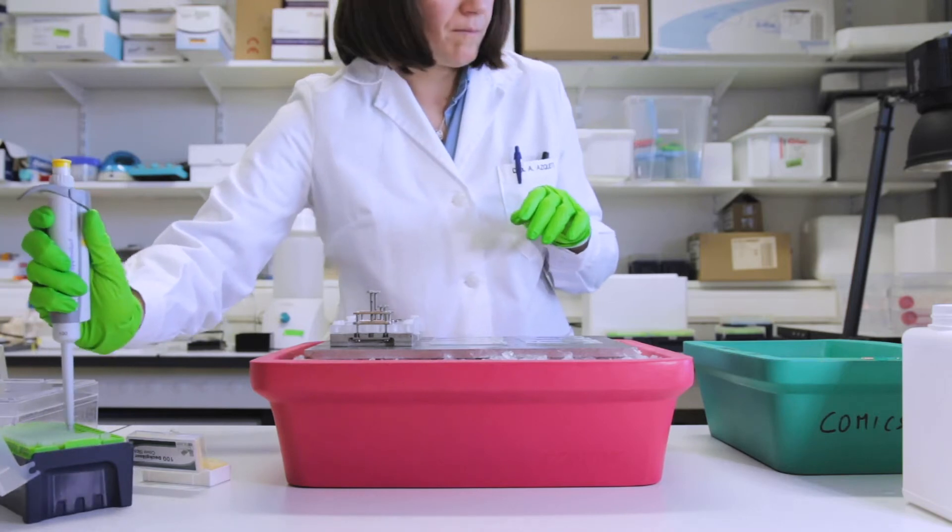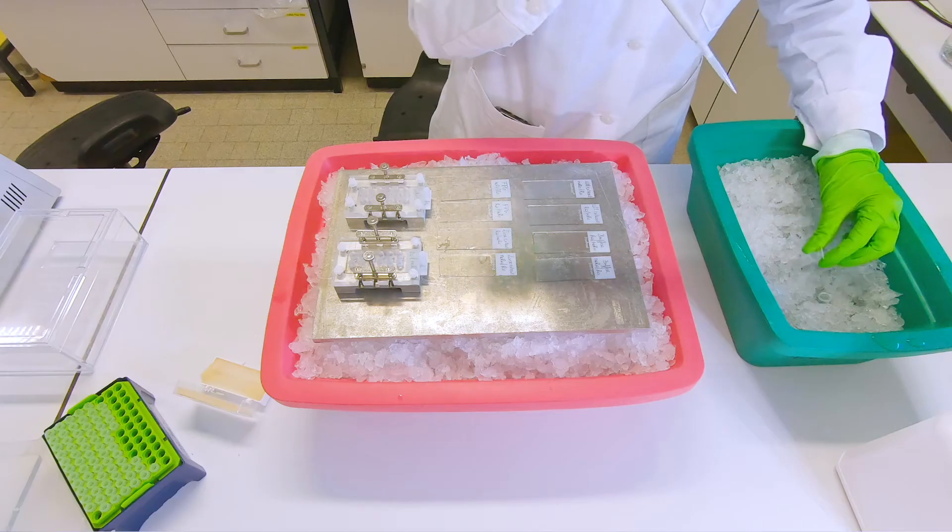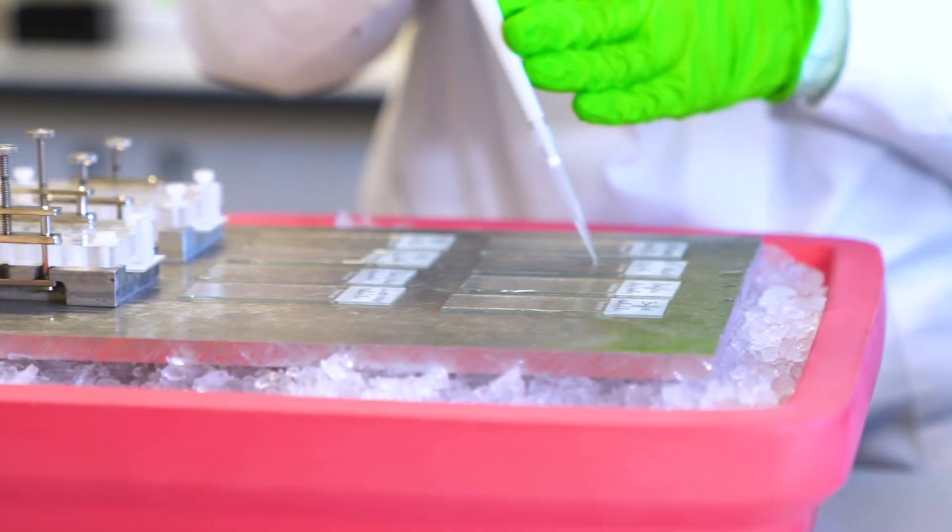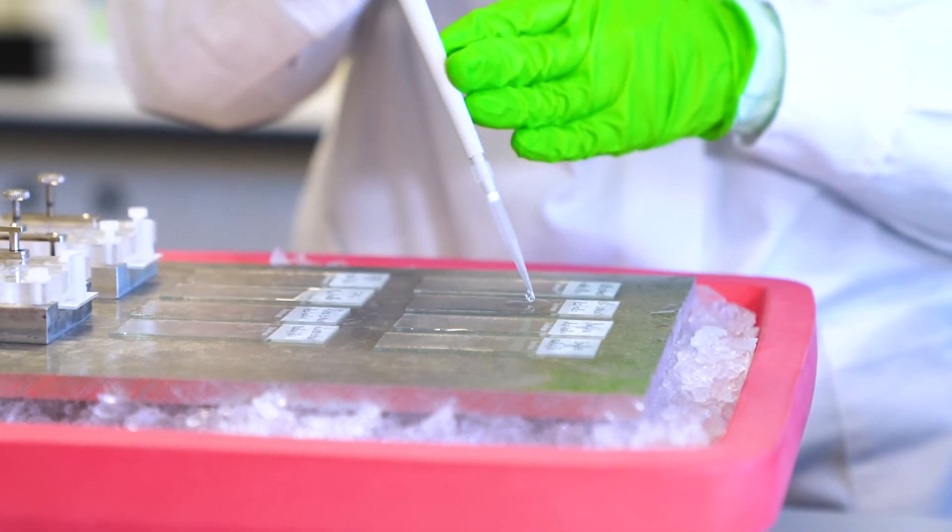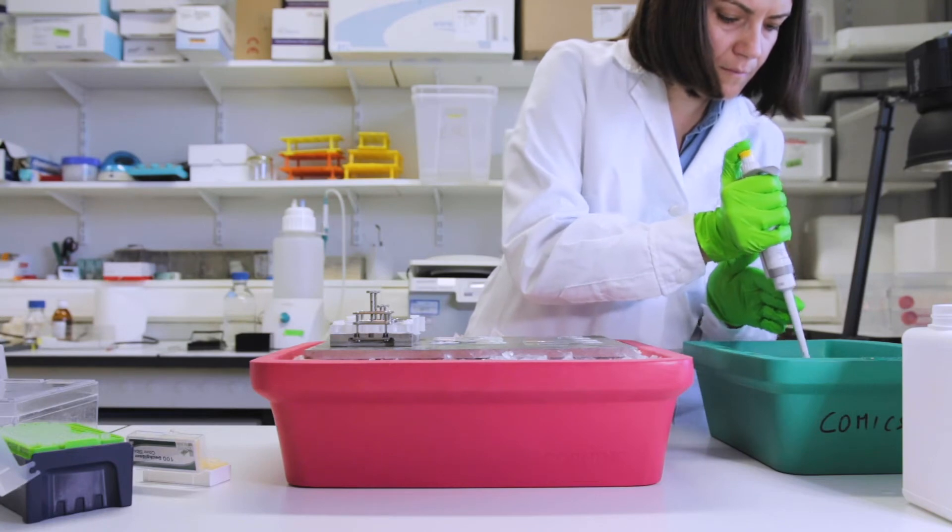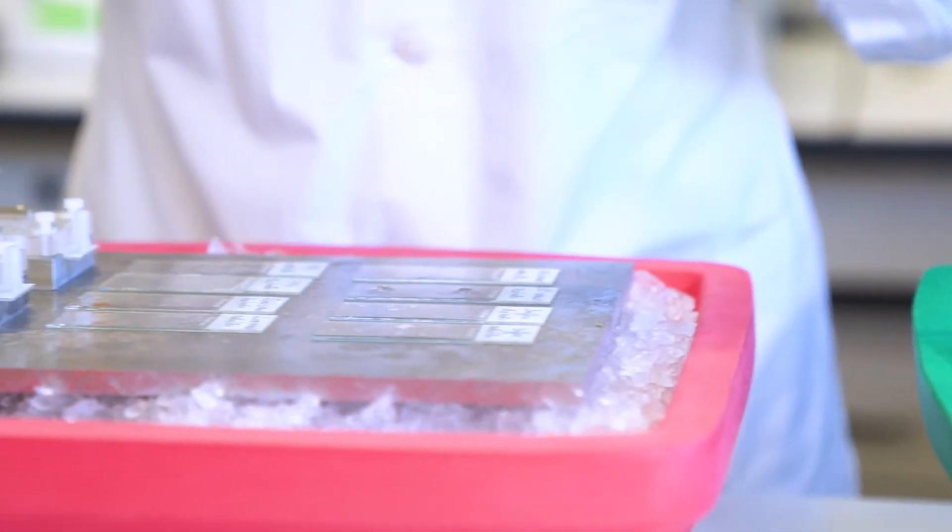So next is the cell extract. Again you take 50 microliters for each of the gels. You can see that we do this by dripping without touching the gels.